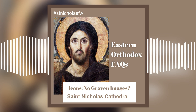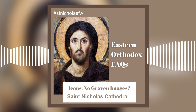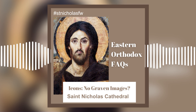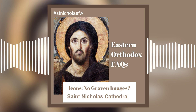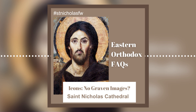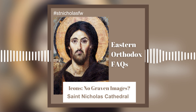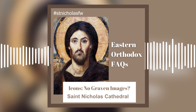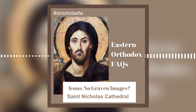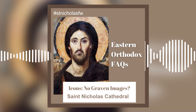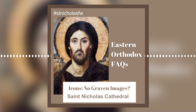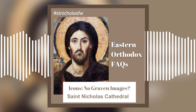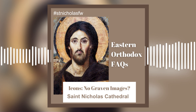So after telling Moses to make the ark of the covenant, God says: 'You shall make a mercy seat of pure gold, two and a half cubits in length and a cubit and a half in breadth. And you shall make two cherubim of gold of hammered work on the two ends of the mercy seat — one cherub on one end and one on the other, of one piece with the mercy seat. The cherubim shall spread out their wings above, overshadowing the mercy seat, their faces toward one another and toward the mercy seat. You shall put the mercy seat on top of the ark. There I will meet with you, and from above the mercy seat, from between the two cherubim on the ark of the testimony, I will speak with you about all that I will give you in commandment for the people of Israel.'